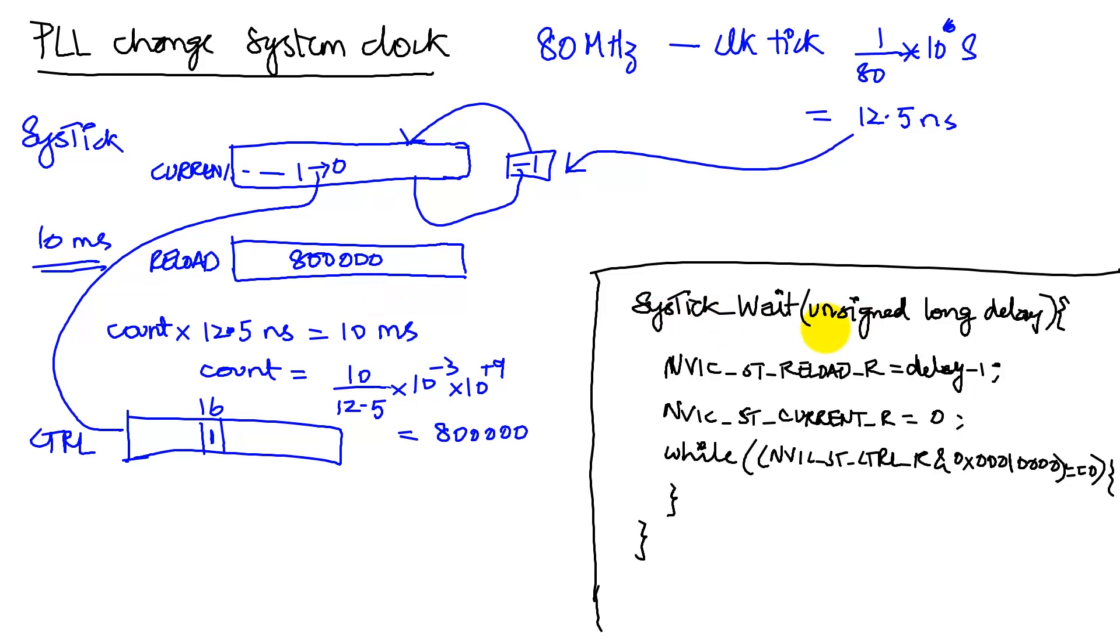So what I'm going to do is, let's say I write a subroutine called SysTick wait, and let's say I pass this value of 800,000, so I'm going to call SysTick wait and I pass the value of 800,000 to it, so which means that when I call the subroutine, the delay value is 800,000.